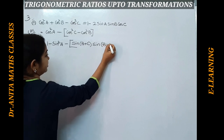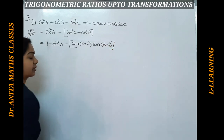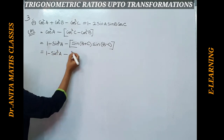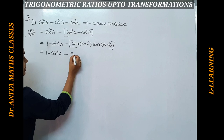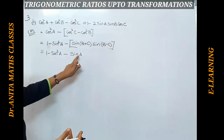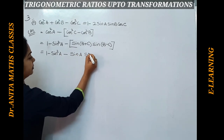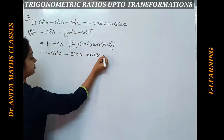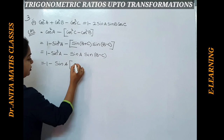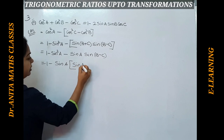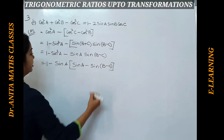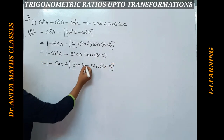So we have 1 - sin²a - sin(b+c)·sin(b-c). Since b+c = 180° - a, sin(b+c) = sinA. So this becomes 1 - sinA·[sinA + sin(b-c)], taking sinA as common.